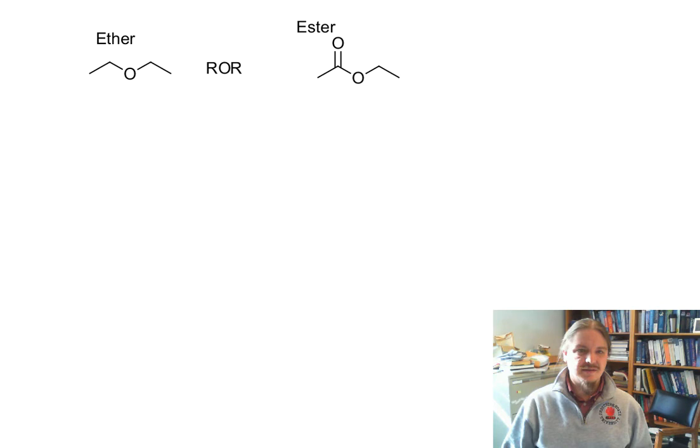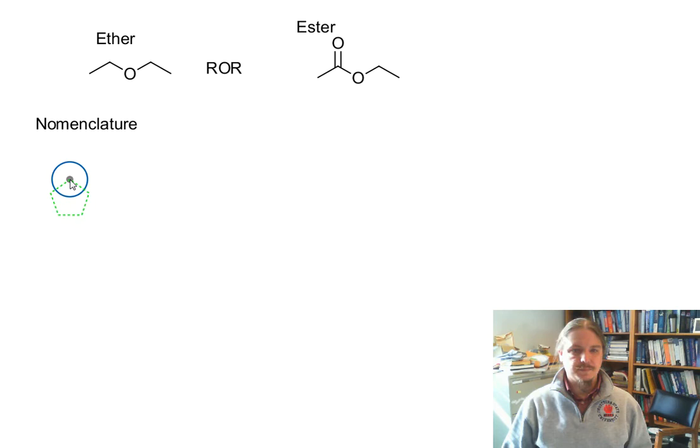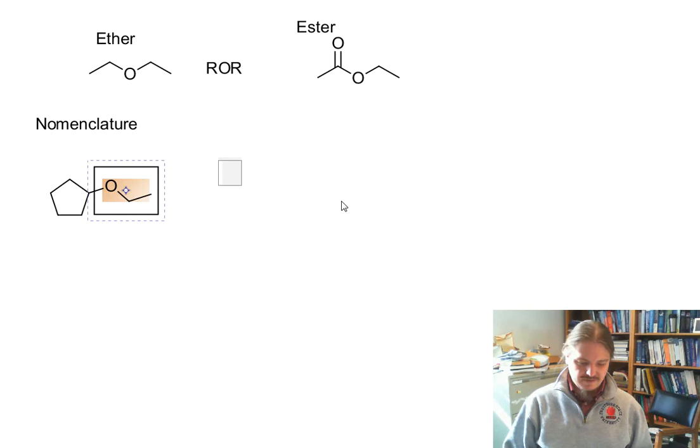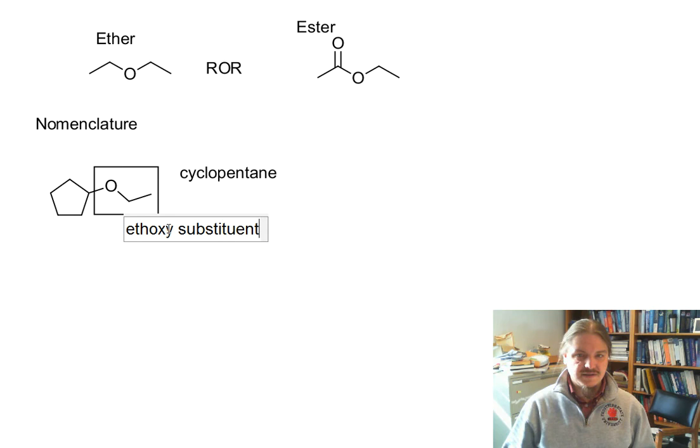Ethers are named... The ether functional group is named as the alkoxy substituent. So I have my cyclopentane, and I have this ether substituent hanging off of it. And so this is some kind of cyclopentane. And in the box, I have an ethoxy substituent.